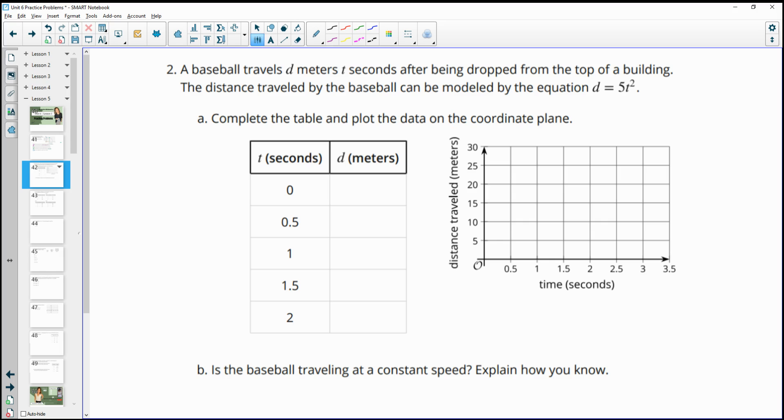Number two, a baseball travels D meters T seconds after being dropped from the top of a building. The distance traveled by the baseball can be modeled by this equation. Complete the table and plot the data on the coordinate plane. So we're just going to plug these values into this function for T. We'd have 5 times 0 squared, which would give us 0. So we'd plot 0, 0.